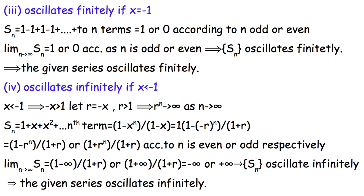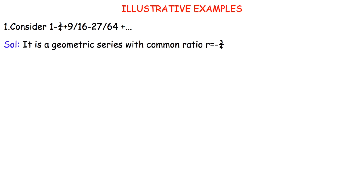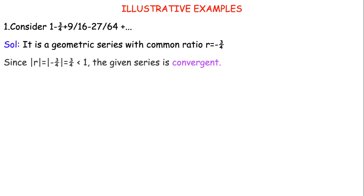Let's solve some examples to determine convergence, divergence, or oscillation. In the first example, the geometric series has common ratio r = -3/4. Since |r| = 3/4 < 1, the given series is convergent.